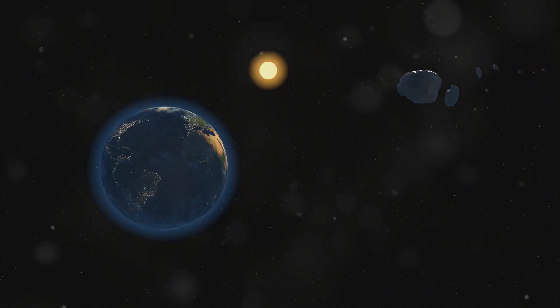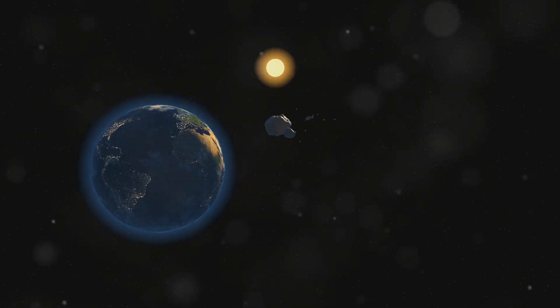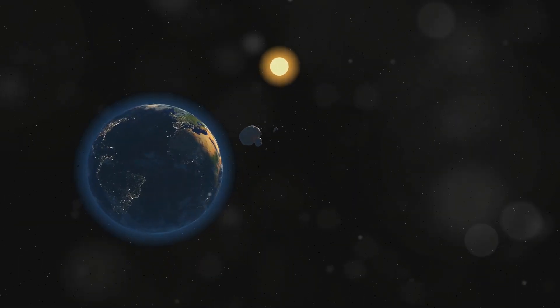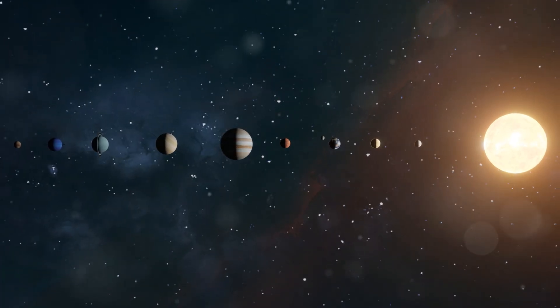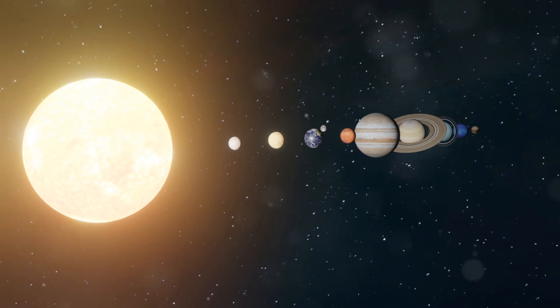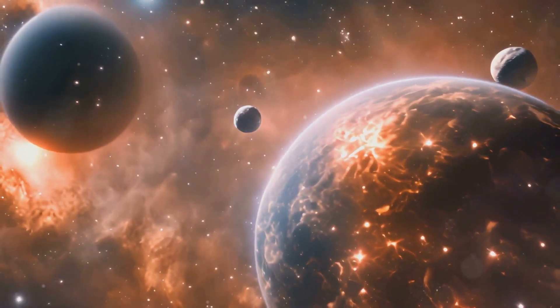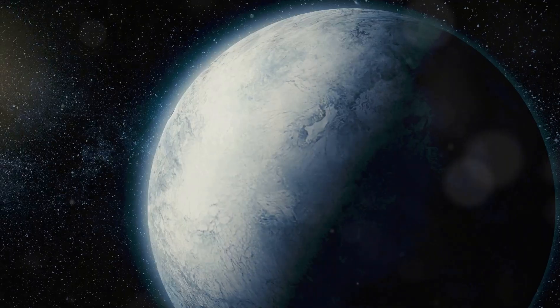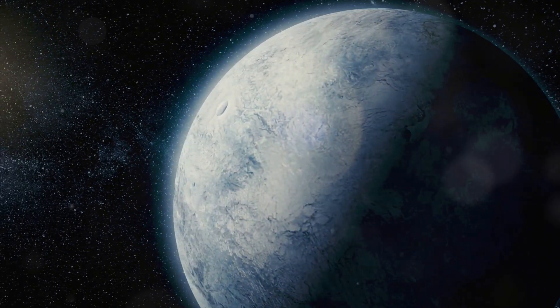Our sun has a family of planets that orbit around it, just like Earth does. These planets, along with their moons, asteroids, and comets, make up our solar system. It's a vast and fascinating place, full of wonders and mysteries waiting to be explored. Let's meet the planets in our solar system. We have eight amazing planets to explore.